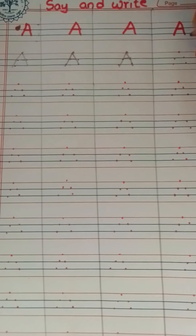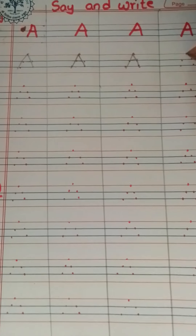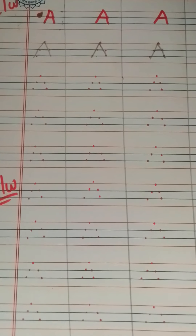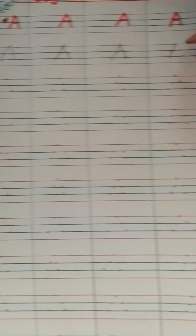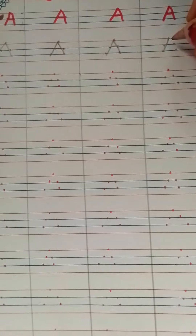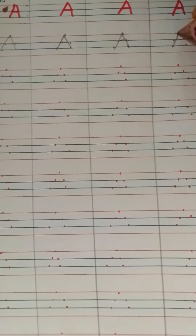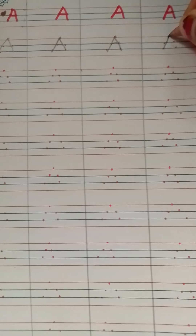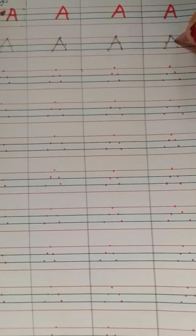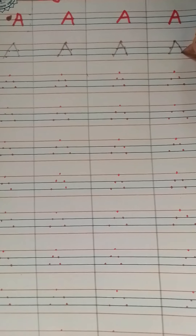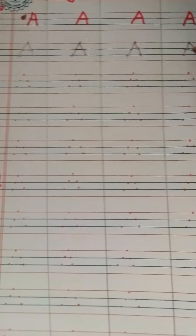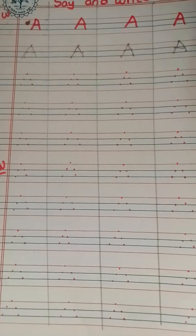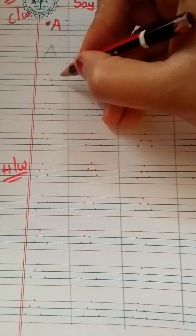Start from here. See the dots. Top line to second middle line — left slanting line. Again from top line, come back up. Again from top line to second middle line — left and right slanting line, sleeping line. A.